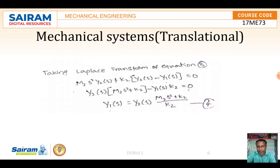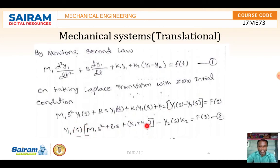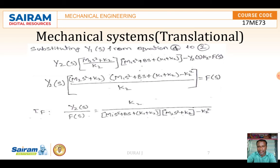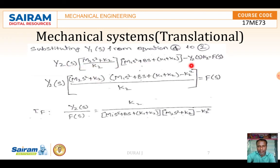We substitute the expression for Y1(s) into Equation 1. Since the output is Y2, we express everything in terms of Y2(s). Substituting Y1(s) into the first equation and collecting Y2(s) as common: Y2(s)·[(M2·s² + K2)·(M1·s² + B·s + K1 + K2) - K2²] / K2 = F(s).